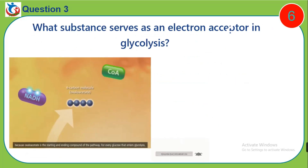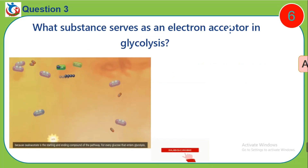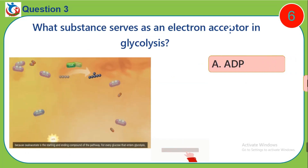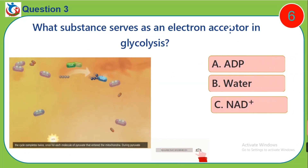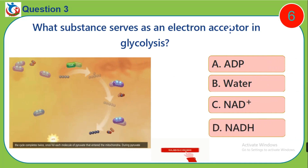Question 3. What substance serves as an electron acceptor in glycolysis? A, ADP. B, water. C, NAD+. D, NADH.